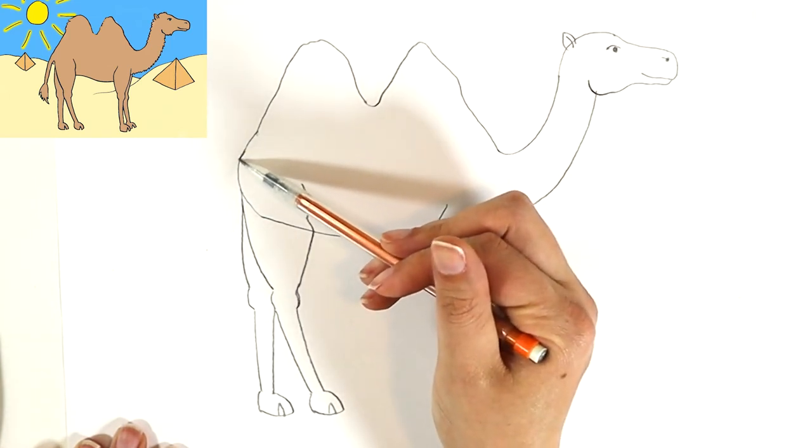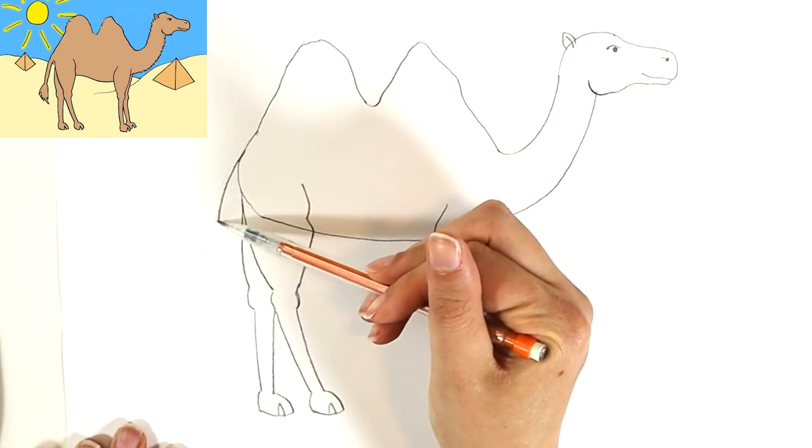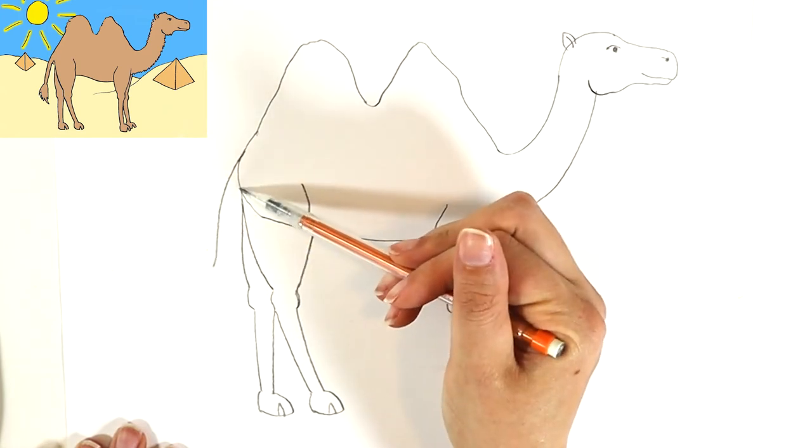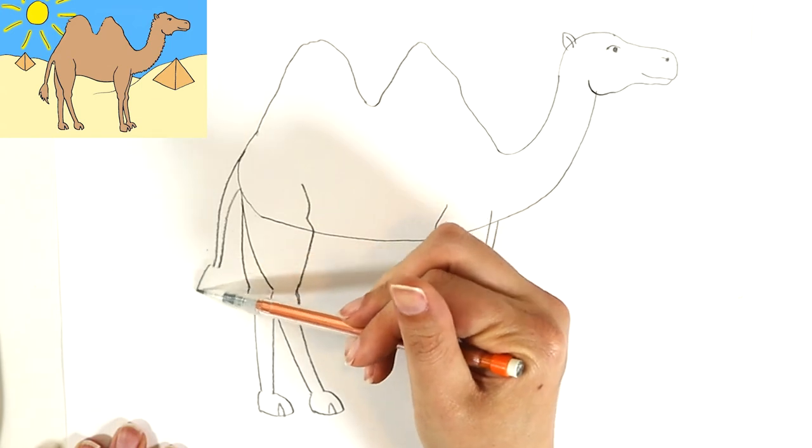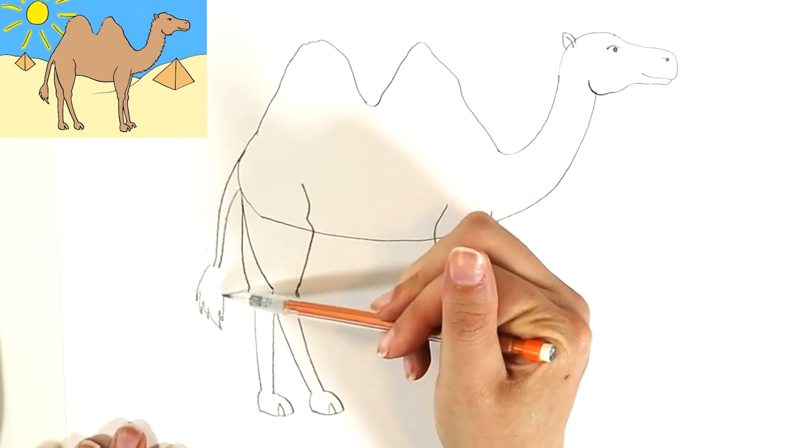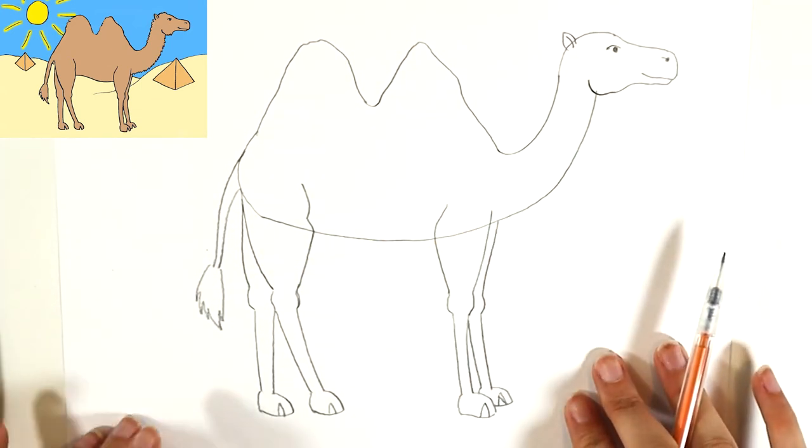So anyway, start right off the back here. I'm just gonna do a curve that goes out, same thing on the other side, a little curve that goes out and fluffy tail.